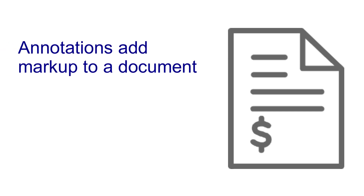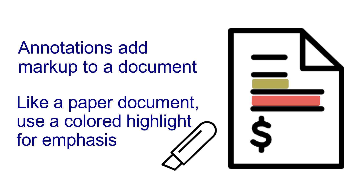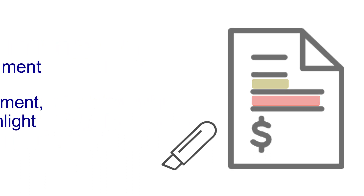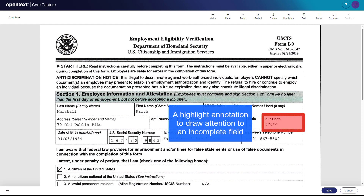Just like a paper document, you can use a colored highlight to attract attention to or emphasize something important. This video will show you how to add a highlighted box to a field in a scanned document.